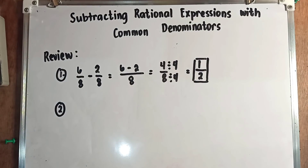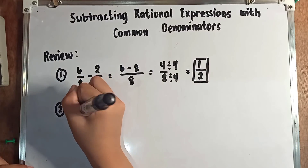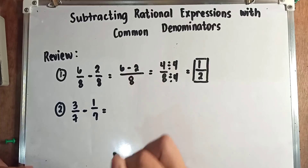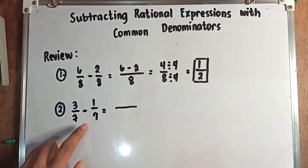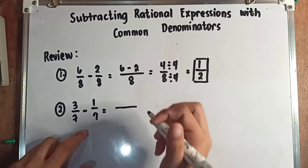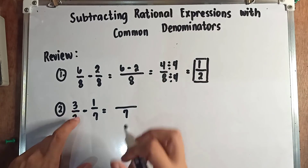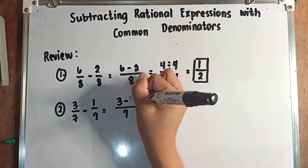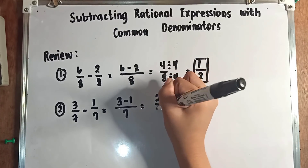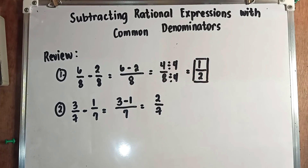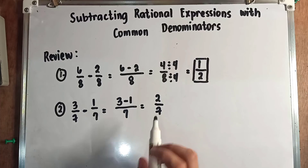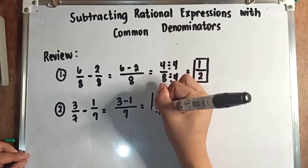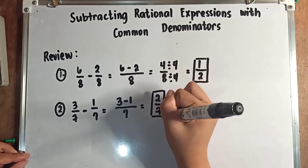Let's proceed to our second example: 3 over 7 minus 1 over 7. Again, we will only copy the denominator 7 and subtract the numerators. So 3 minus 1 gives us 2 over 7. Can we simplify 2 over 7? No. So our final answer is 2 over 7.